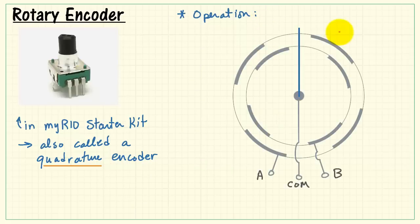Now let's consider the operating principle of the rotary encoder. I have two concentric circles. These are called the switch rings, and each switch ring contains four contact zones that are all connected electrically and brought out as terminal A.